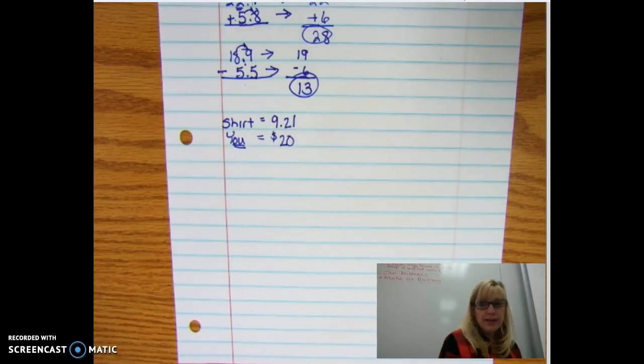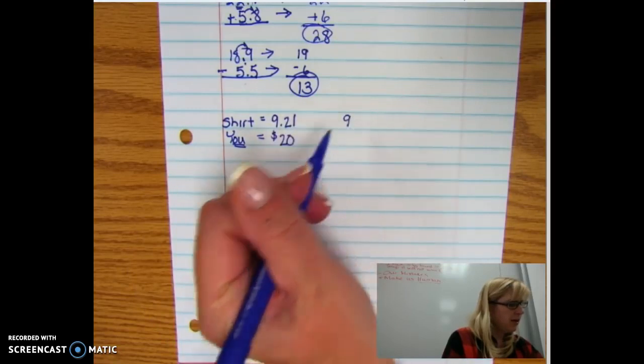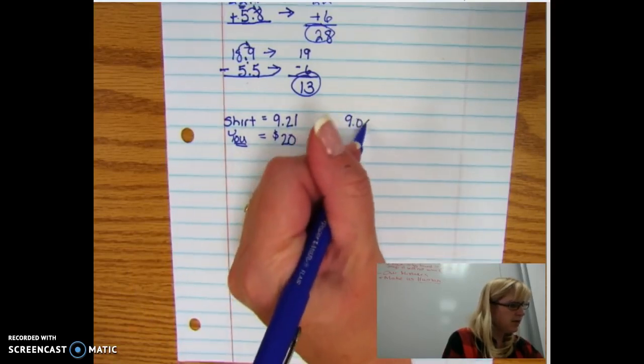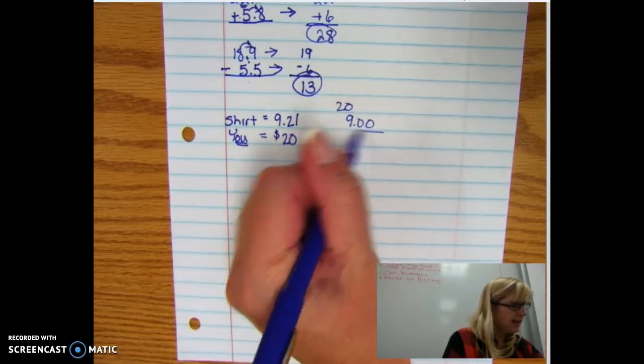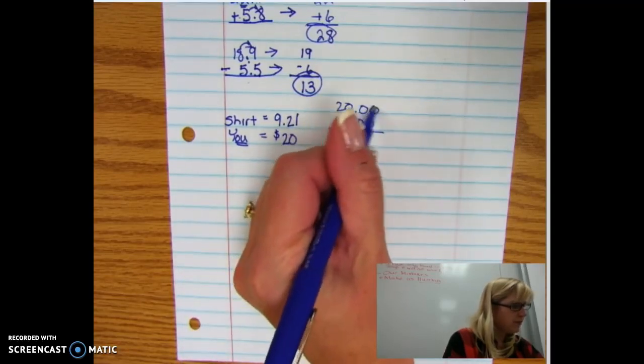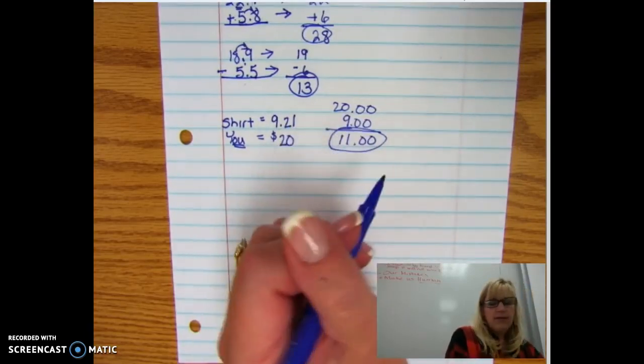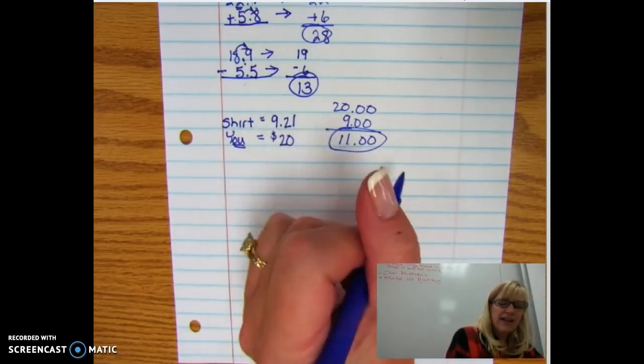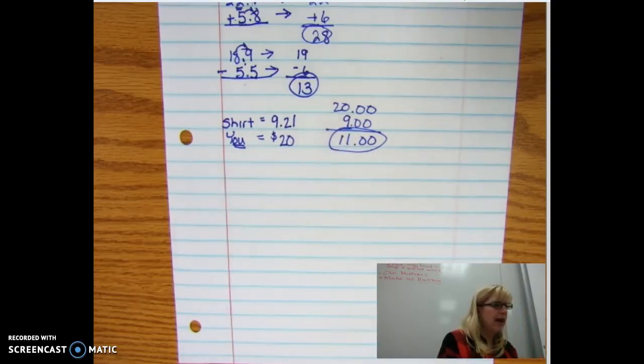Now, if we were to do estimation on this, this rounds down to about $9. And then obviously this is $20. So if we do 20 minus nine, we should get $11 around that. Now we know it's going to be a little less than that because there was the 21 cents to consider. But you know in your head, okay, I should get around $11, and that will help you know if you get the correct change.